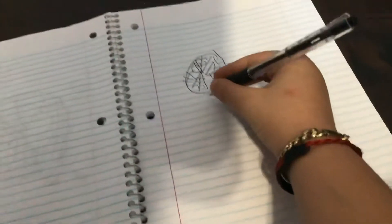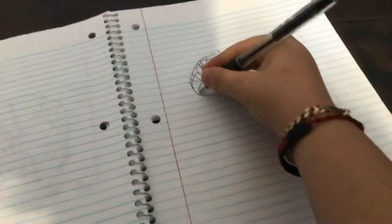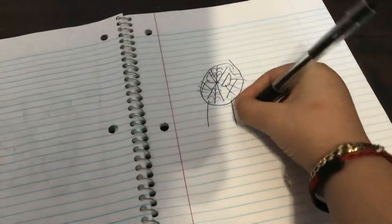Do a line down. Do that on the other. And then we're going to draw a body like that.